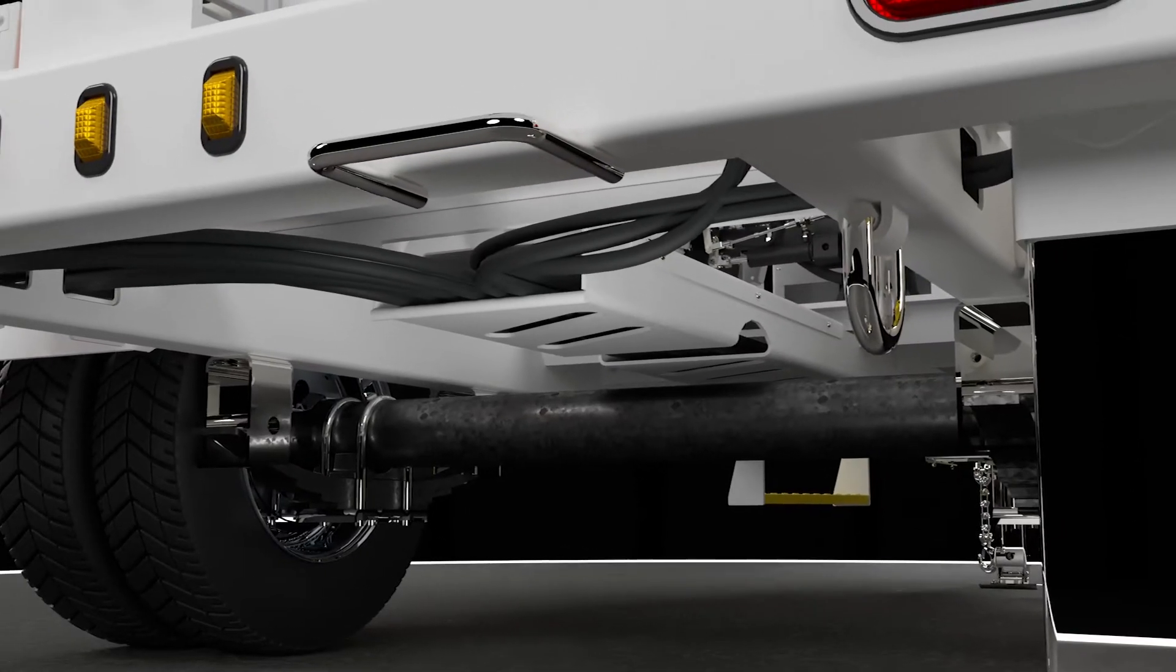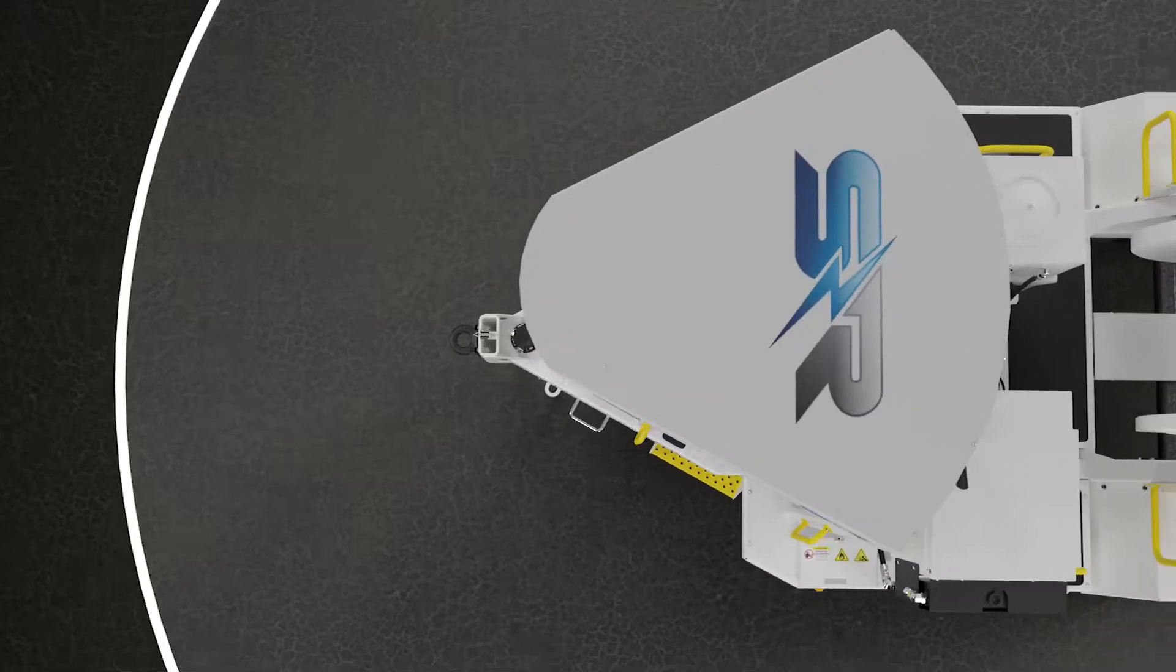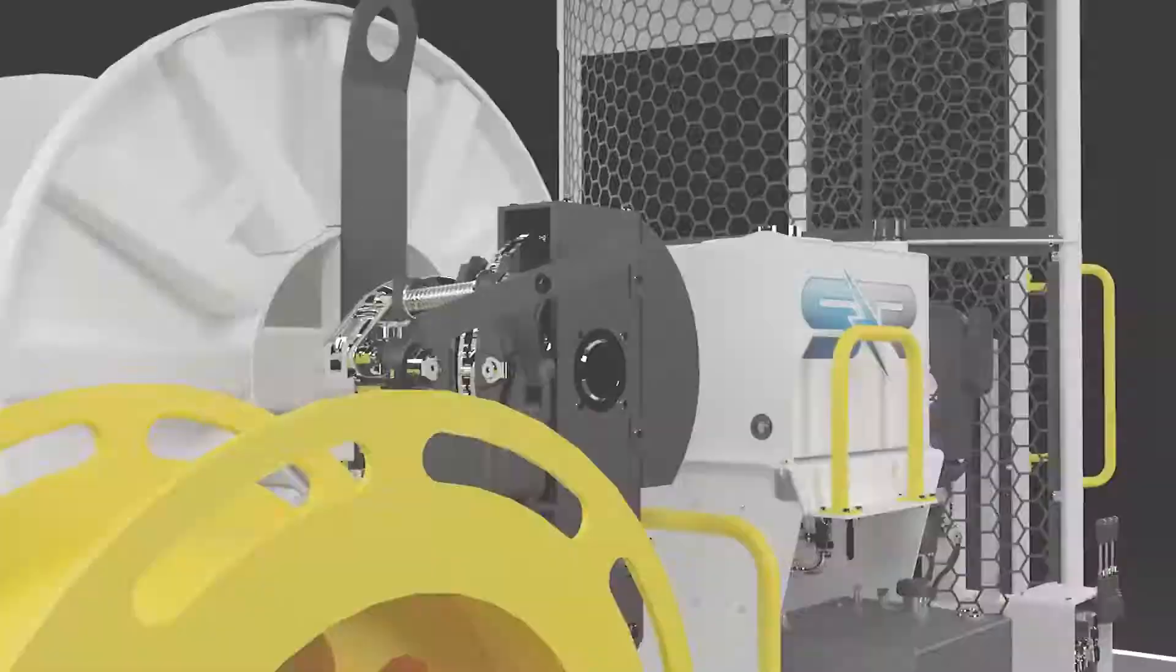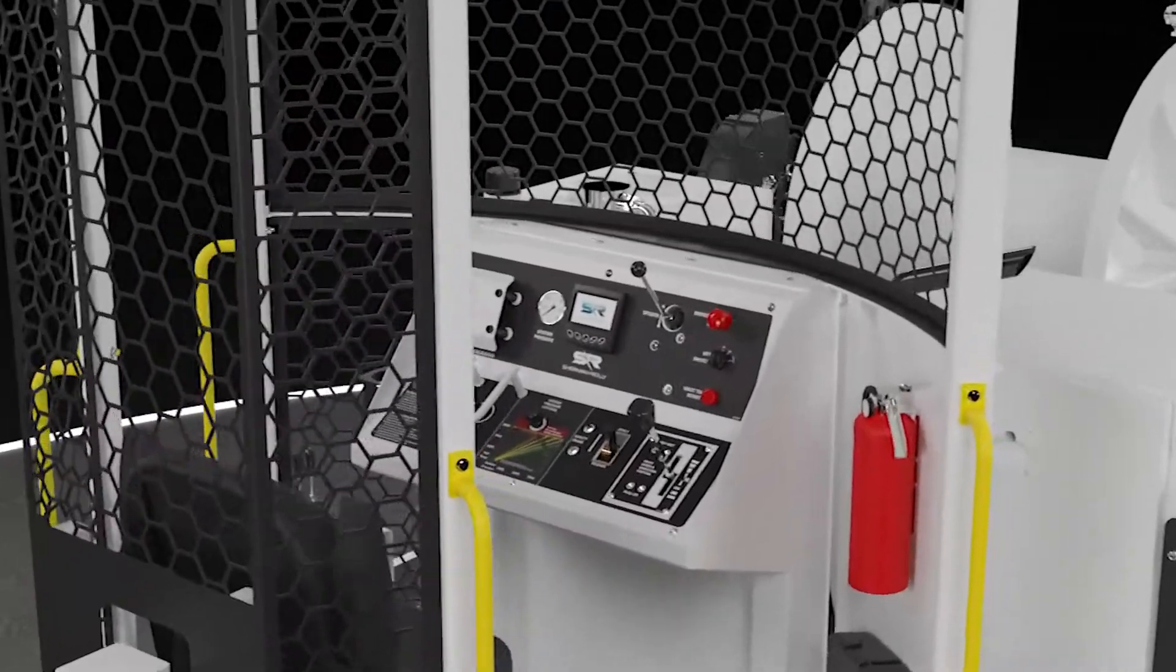We call it the PT-3000H Polar Tensioner, and where we lack in naming things, we make up in engineering, because this machine was made for old and new linemen alike.